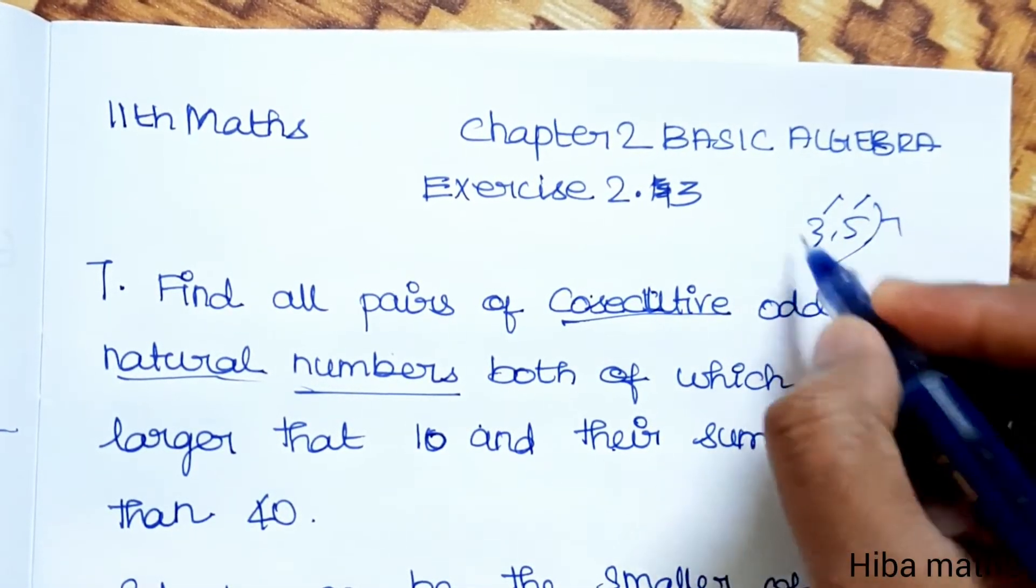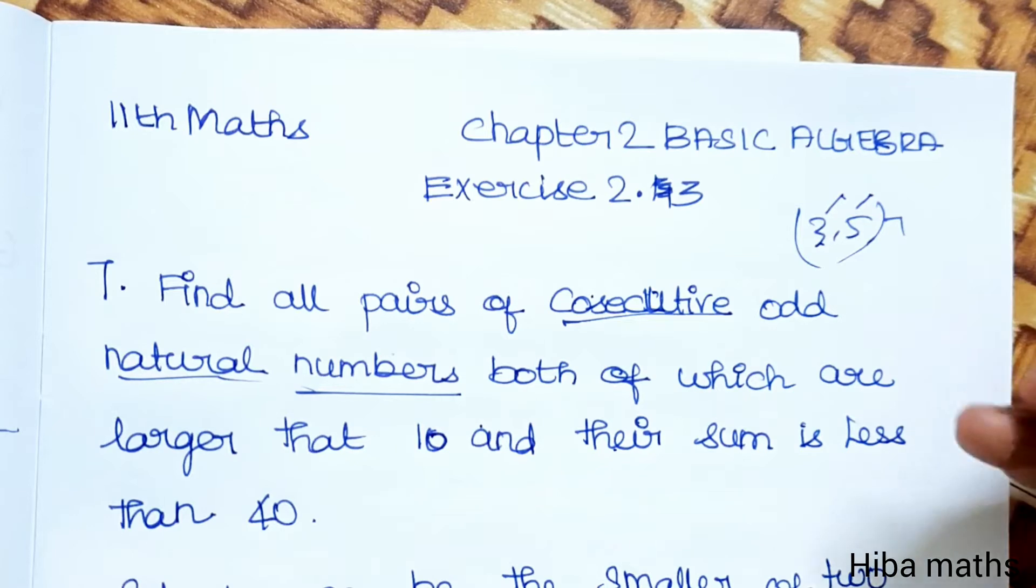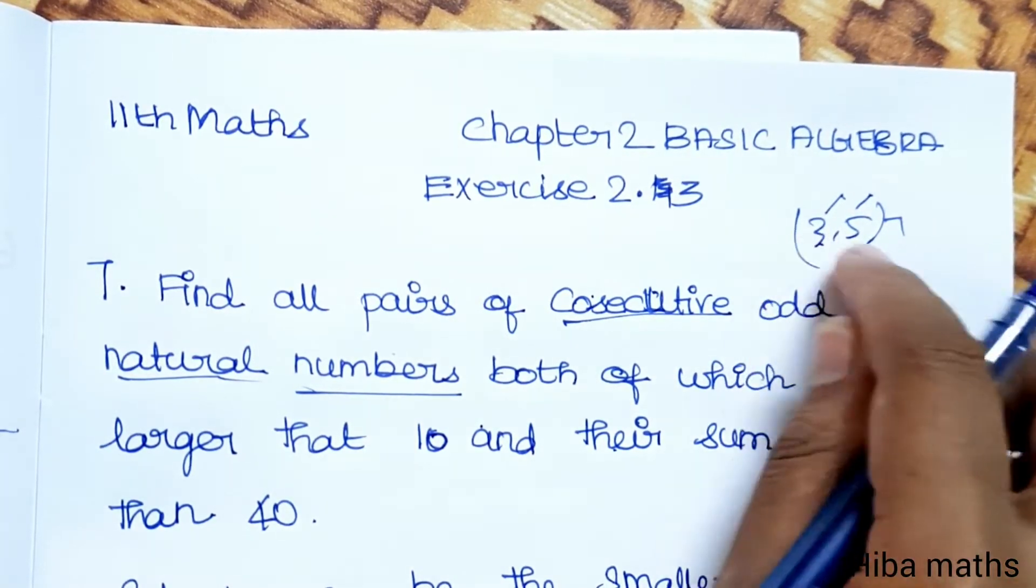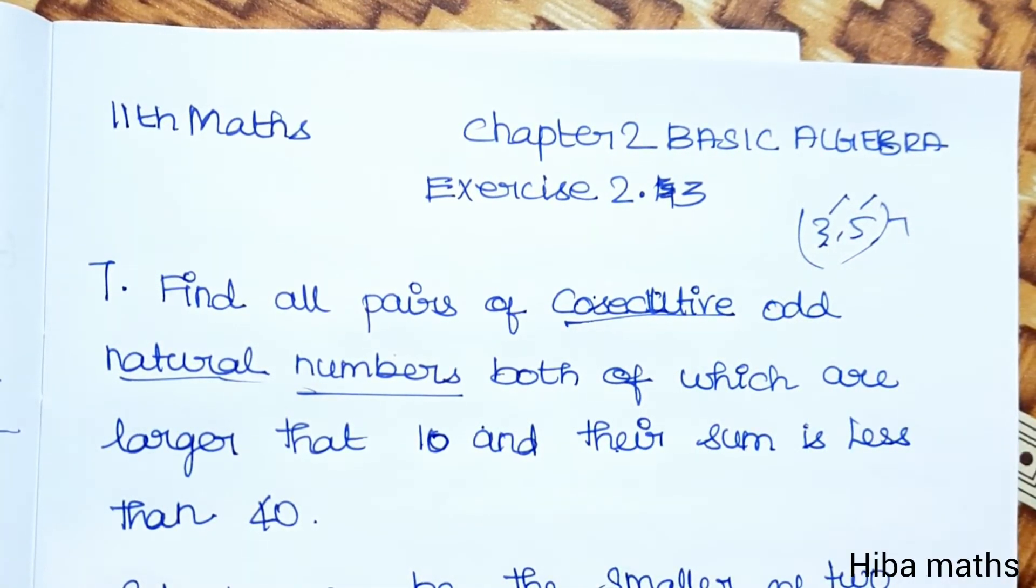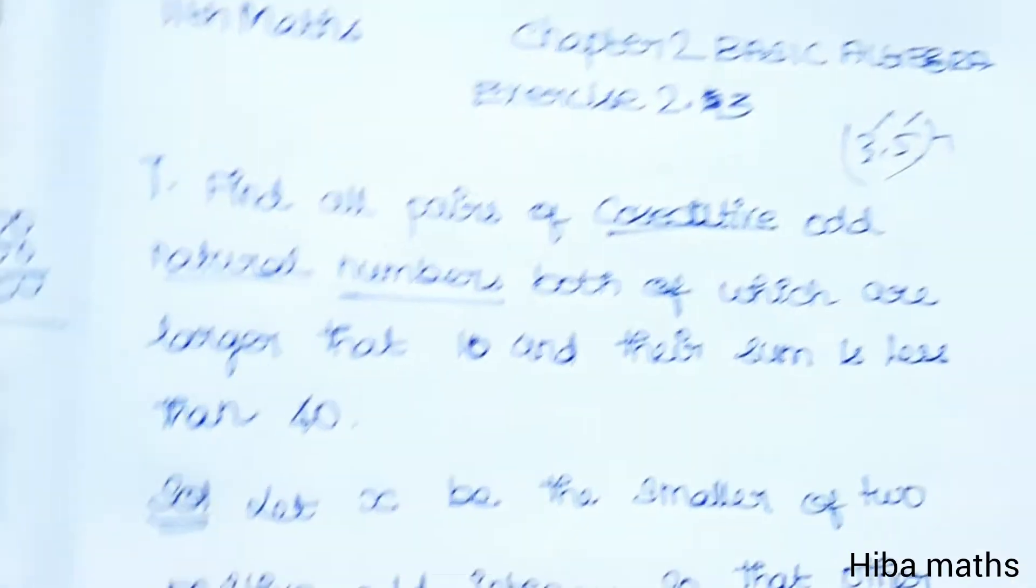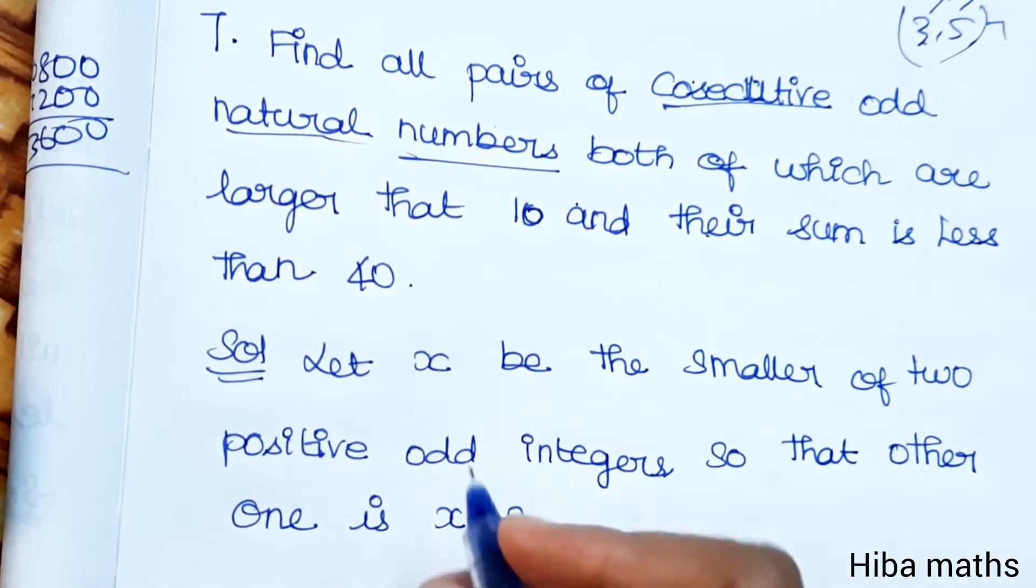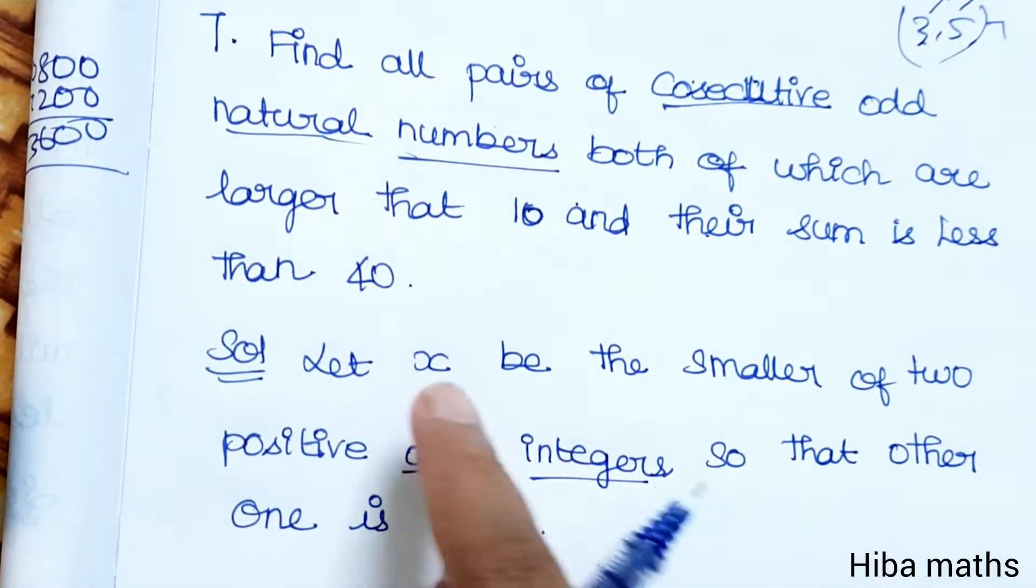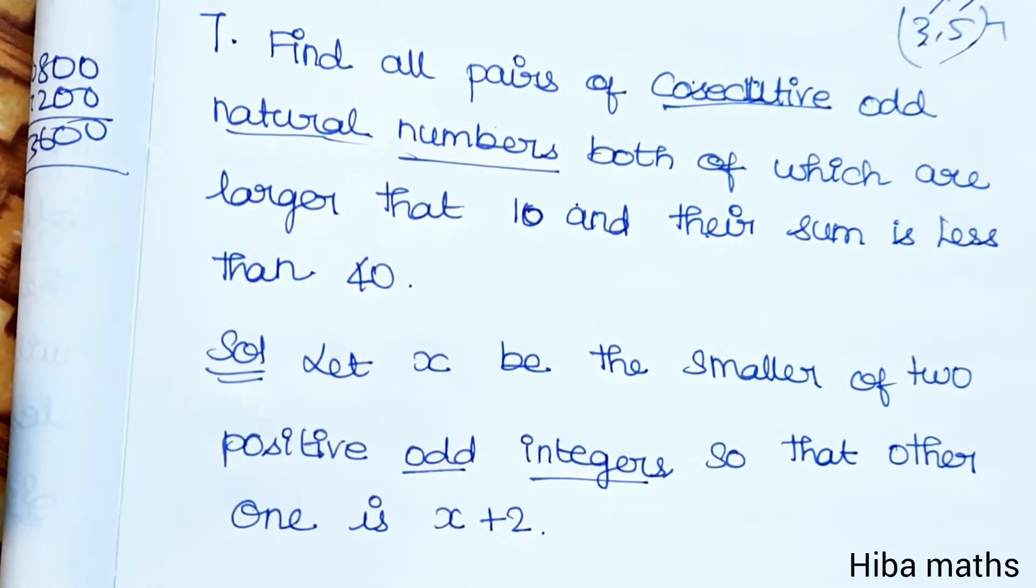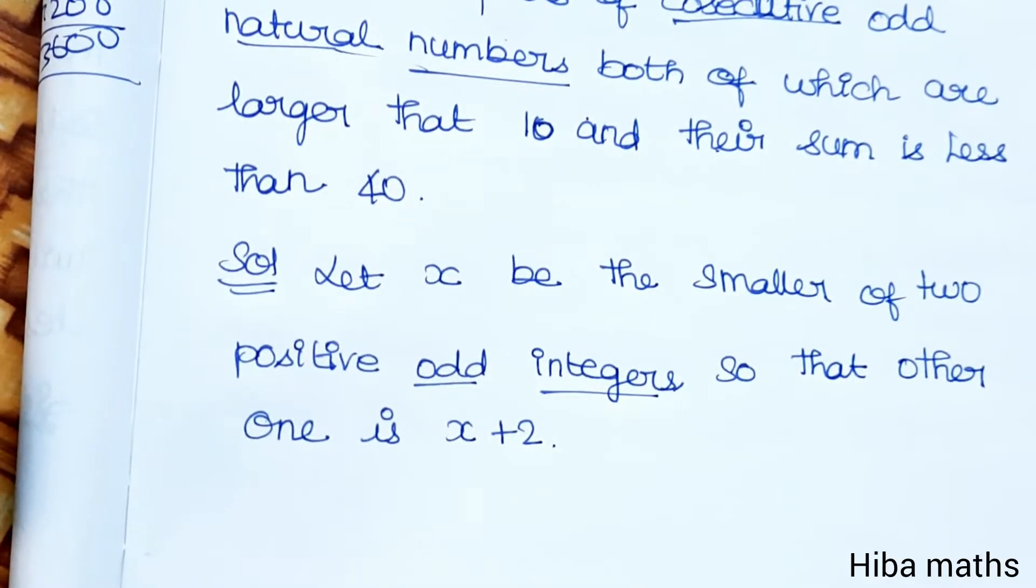So, both numbers are larger than 10 and their sum is less than 40. First, let x be the smaller of the 2 positive odd integers, so that the other one is x plus 2.